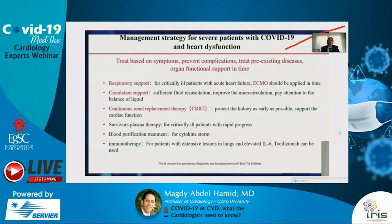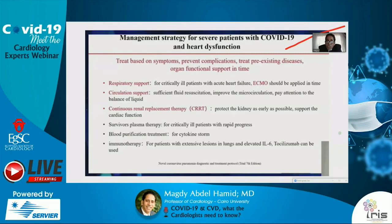Management strategy for severe COVID-19 patients with cardiac dysfunction: treat based on symptoms, prevent complications, treat pre-existing disease, and provide timely organ functional support. This includes respiratory support for critically ill patients, ECMO for acute heart failure, circulatory support, fluid resuscitation, improving microcirculation, continuous renal replacement therapy to protect the kidney, convalescent plasma therapy for critically ill patients with rapid progression, and blood purification treatment for cytokine storm. For patients who develop cytokine storm, the use of interleukin-6 blockers such as tocilizumab has been very effective in treating severe illness.